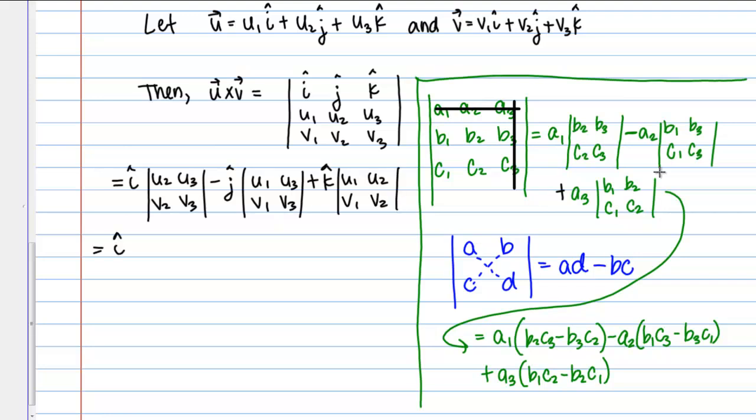And then to finish out, I simply calculate the determinant of each of these 2 by 2 matrices. So I'm going to have i times U2 V3 minus U3 V2, minus vector j times U1 V3 minus U3 V1, plus vector k times U1 V2 minus U2 V1. And you might want to write that in a slightly different order, but this gives us the components of the cross product.